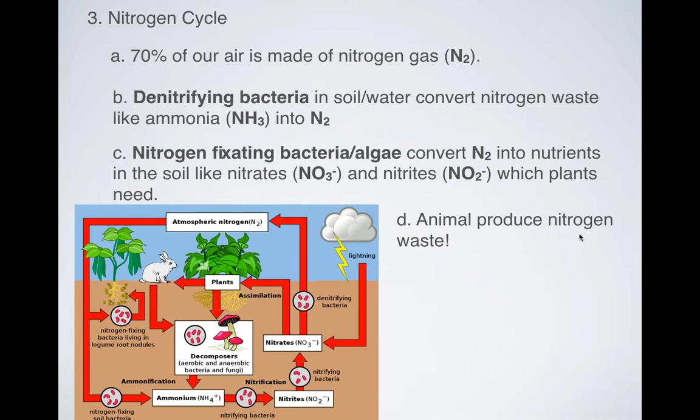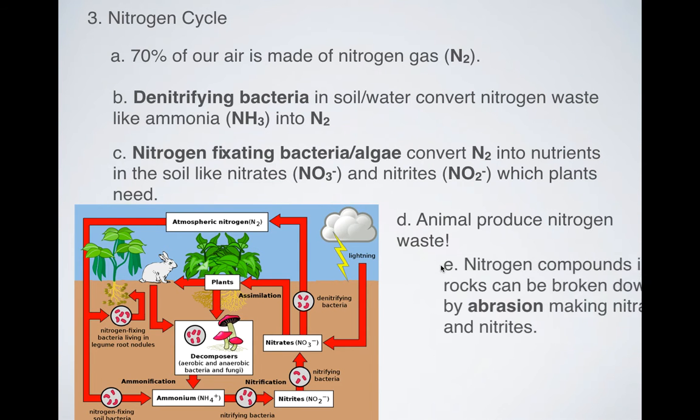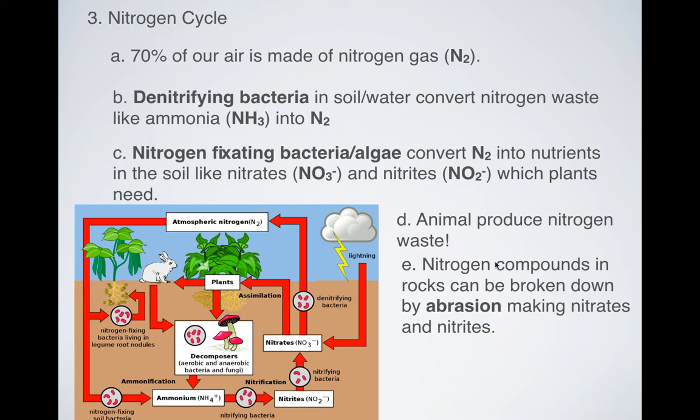Now animals, we produce tons of nitrogen waste. So it's not ammonia that we produce, we produce urea, which is where urine gets its name. But it's the same kind of thing. It's a nitrogen-containing compound. Nitrogen compounds are found all over the place. They can be found in rocks and they can be broken down by abrasion. And remember, that's a form of weathering that we talked about.